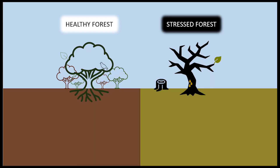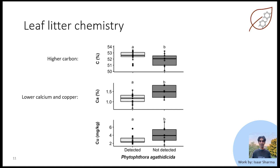To better understand what happens to a forest when it is under stress, we start looking at a few of its components, such as what happens to the leaf litter chemistry. Asara found that the concentration of carbon was higher in leaves from kauri in which the pathogen was detected, while the concentrations of calcium and copper were lower.